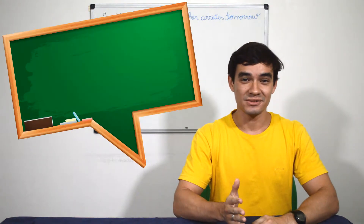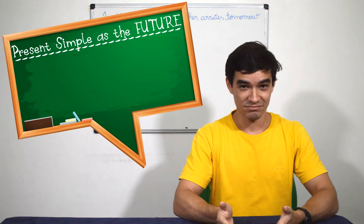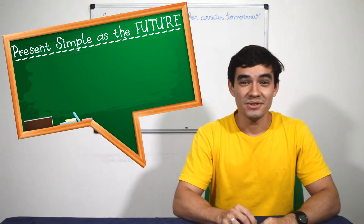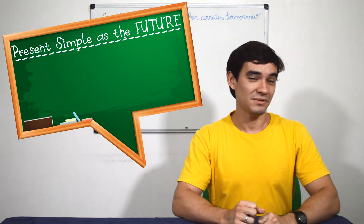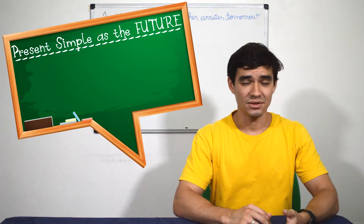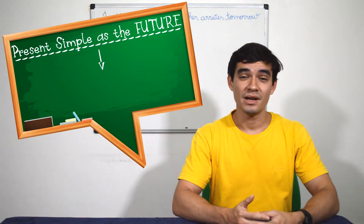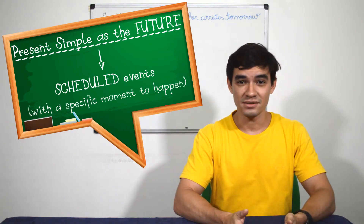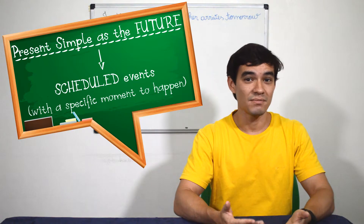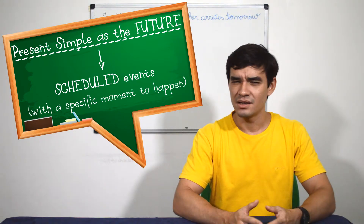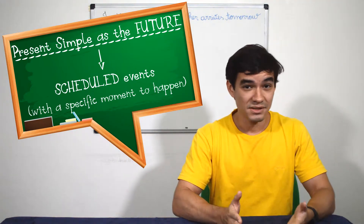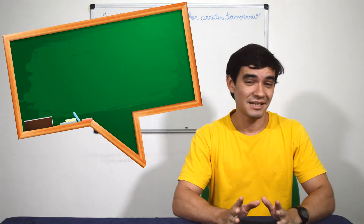The fourth use talks about the future. Yes, you've heard it right — it's possible to use the present simple to talk about the future. However, in order for this to happen, we have to talk about events that are scheduled, so they have a specific moment to happen. It sounds weird, but we do the same thing in Portuguese. Let's see some examples.